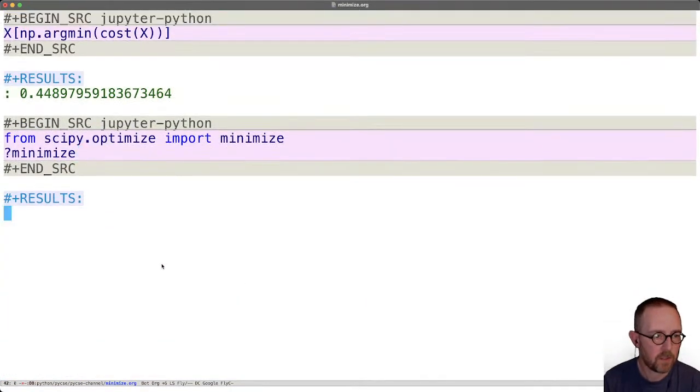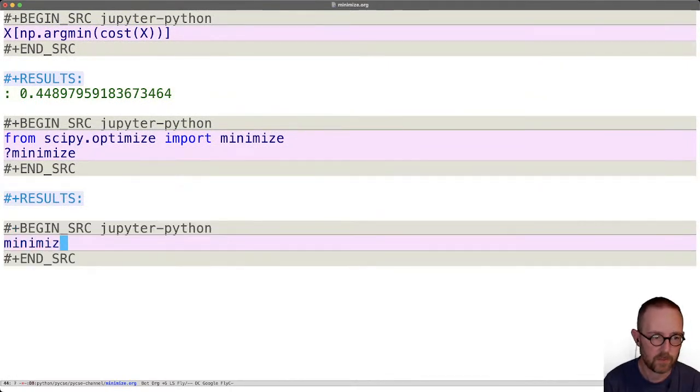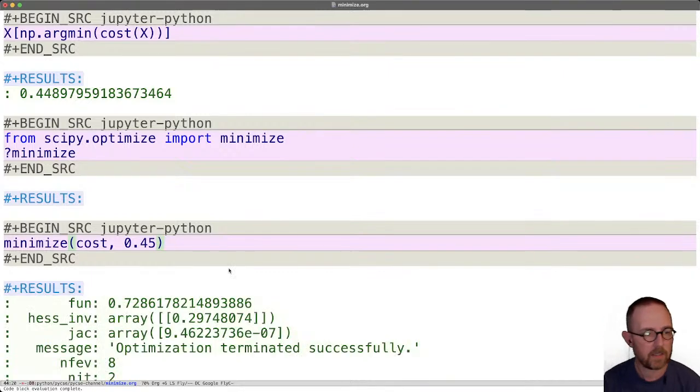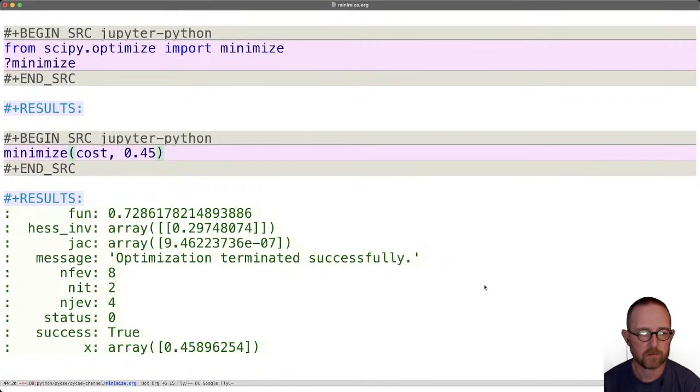All right, so how do we use it? It's really very straightforward. It's just minimize the cost and let's guess 0.45 as our initial guess. And it outputs something similar to what solve_ivp does. This is a data structure that has all of these attributes, so let's go ahead and save it here.